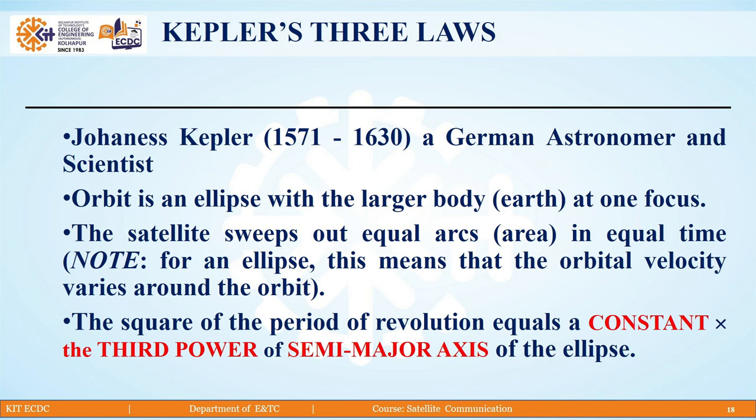Second law: the satellite sweeps out equal arcs or area in equal time. Here we need to note for an ellipse, this means that the orbital velocity varies around the orbit.